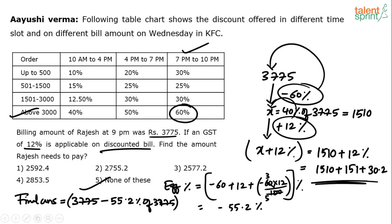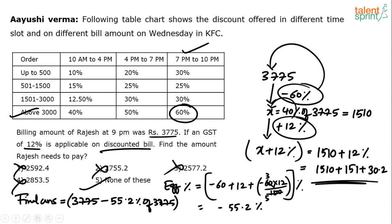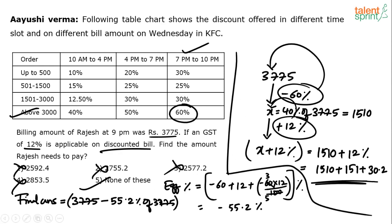You don't need a full calculation: 12% of 1510 is approximately 181, giving around 1691. That's nowhere near options 1–4. Whether you use the step-by-step method or the effective percentage method, you know you must reduce by about 55%, so option 5 — none of these — is correct.